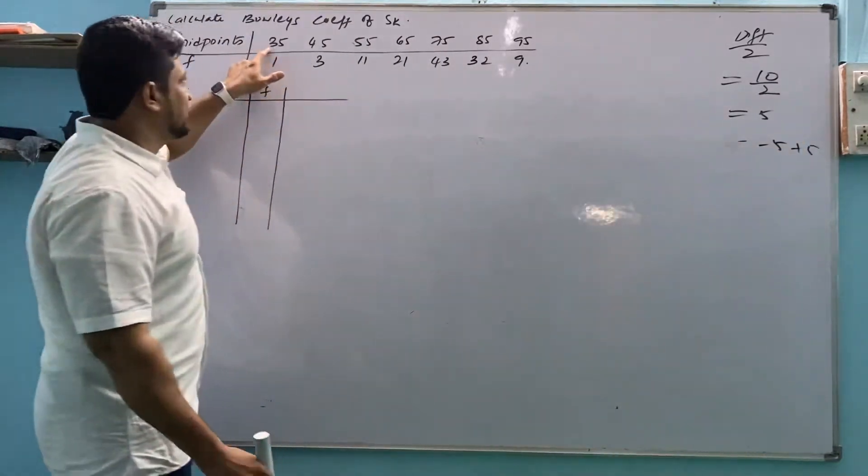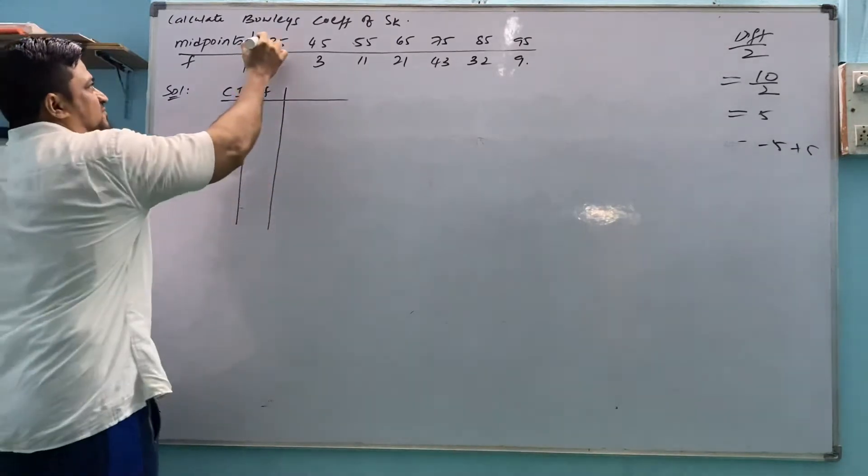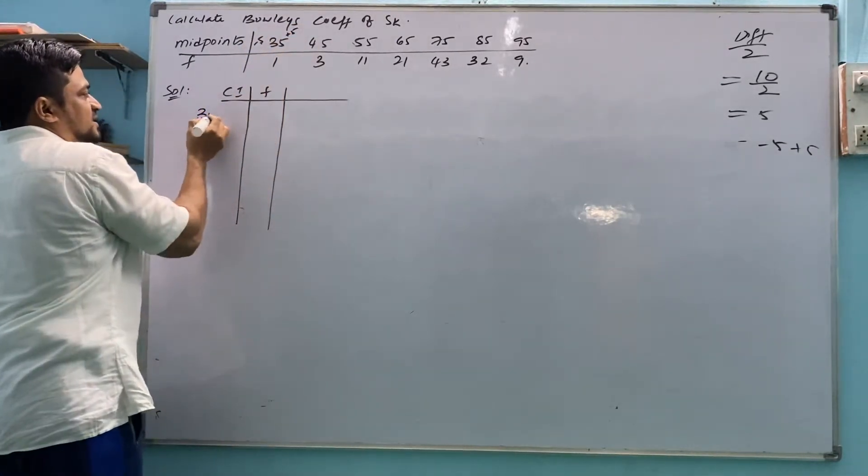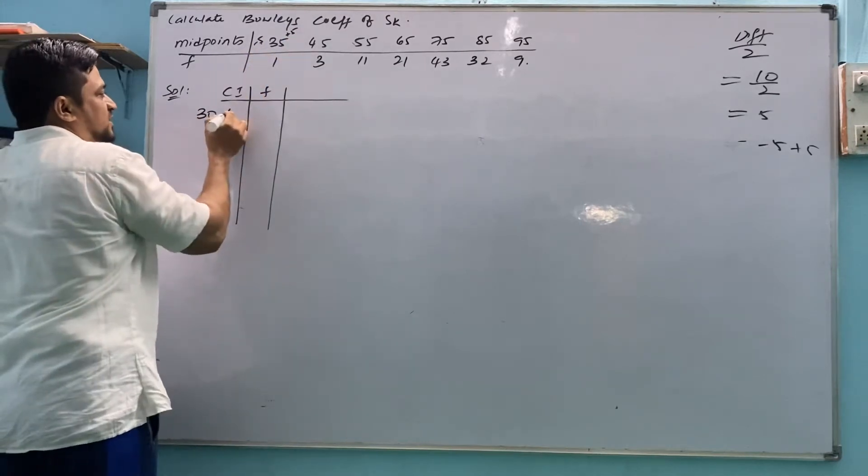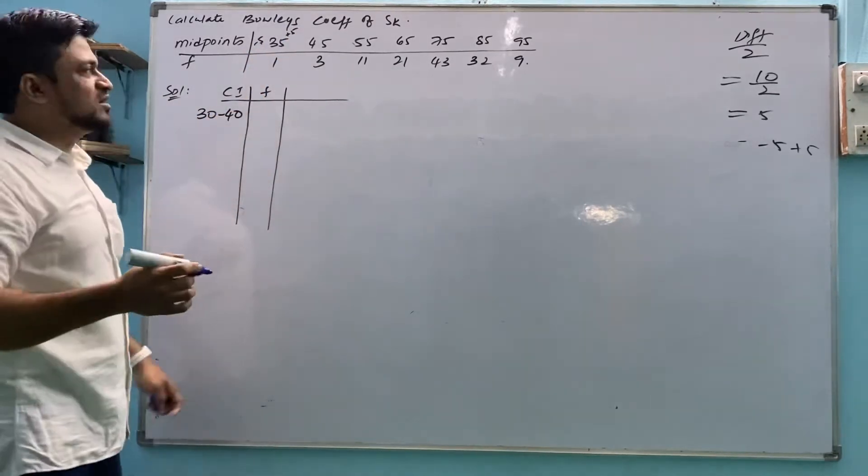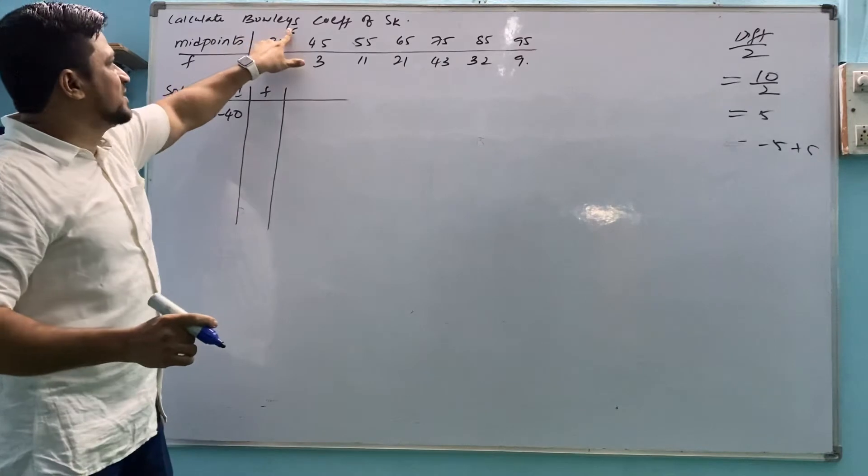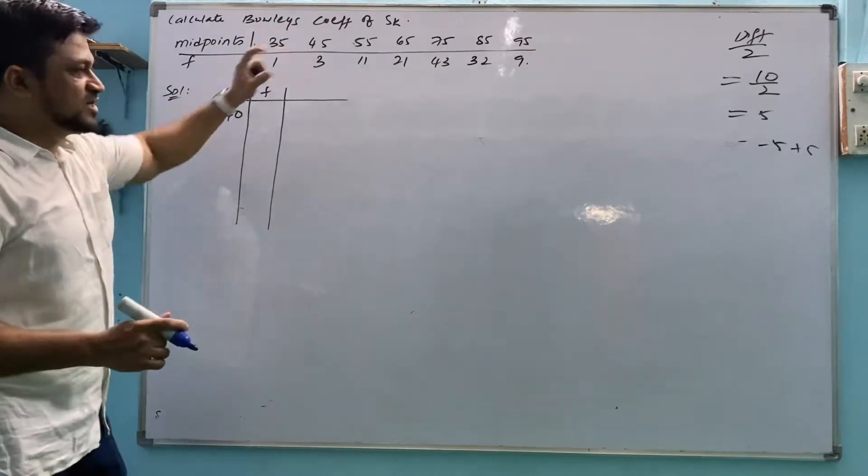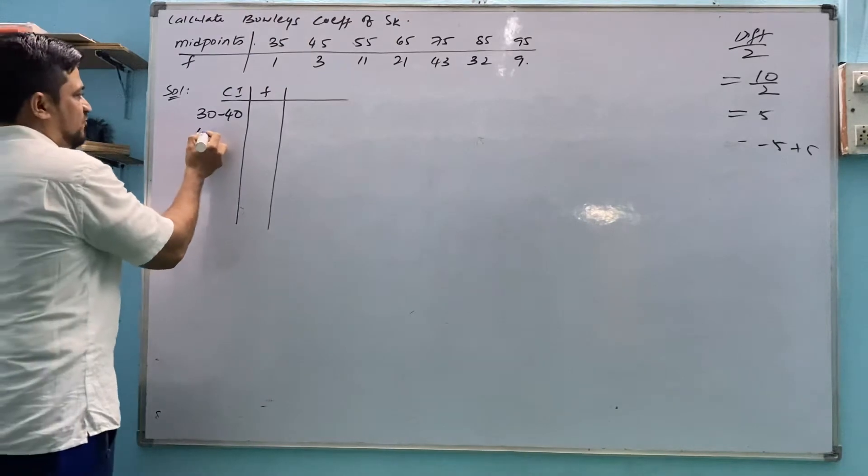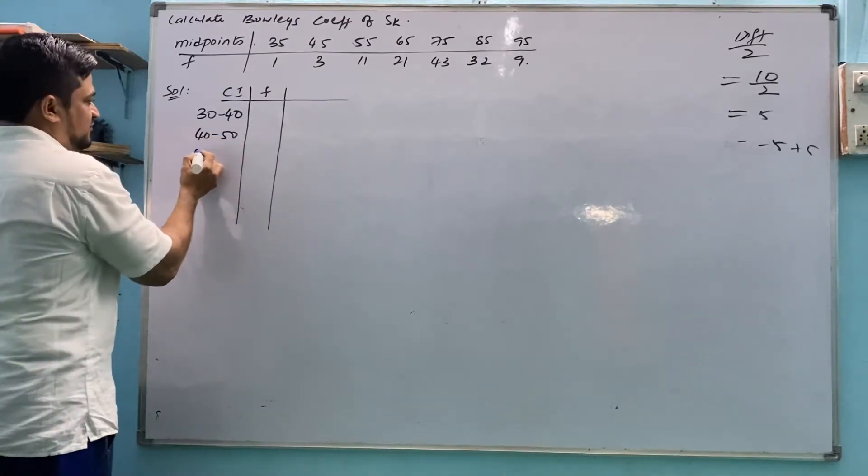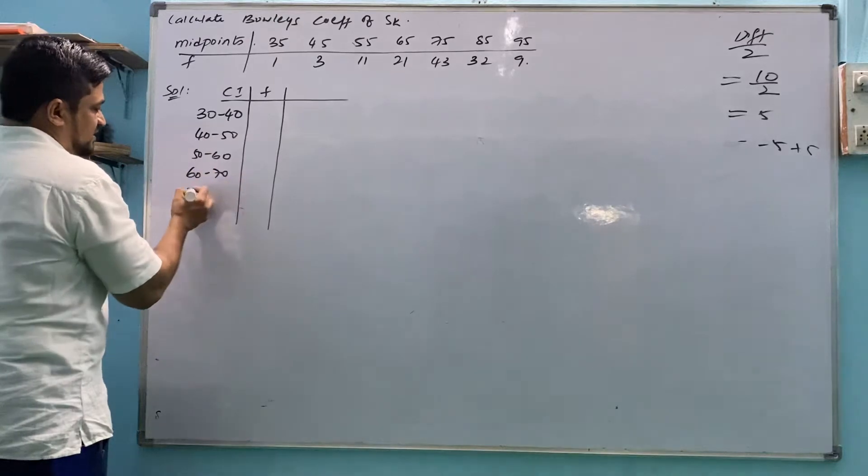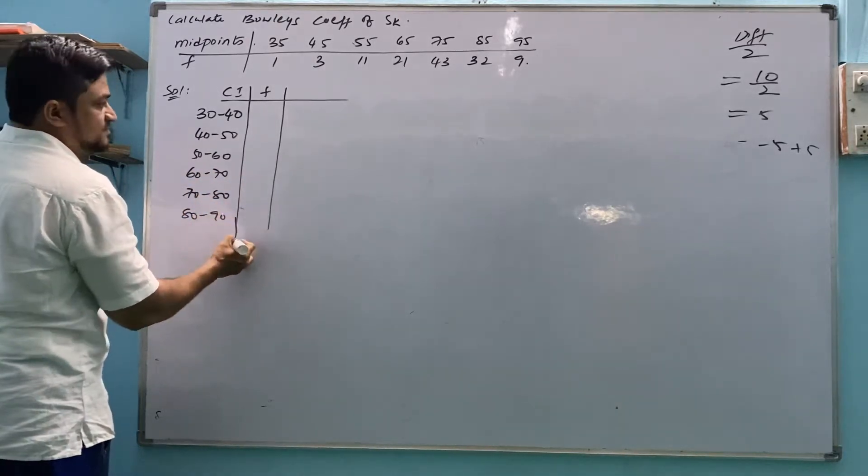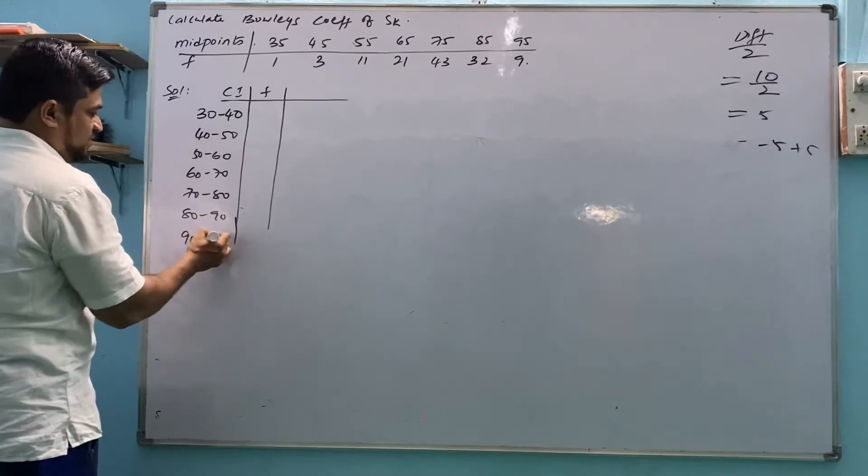35 is there. You can subtract 5 and add 5 to this 35. 35 minus 5 is 30, 35 plus 5 is 40. So 30 to 40. Or in general you can think 35 is mid value of 30 and 40. 45 is mid value of 40 and 50, 50 and 60. Similarly 60 to 70, 70 to 80, 80 to 90, 90 to 100.